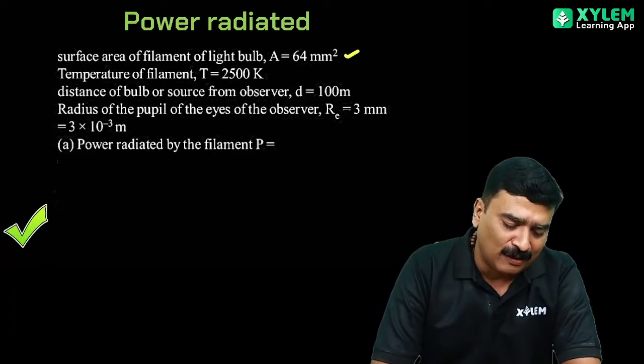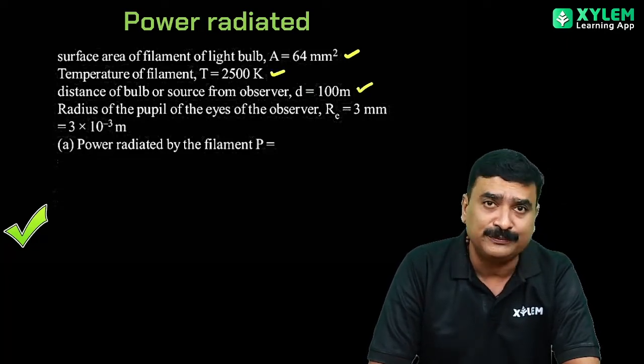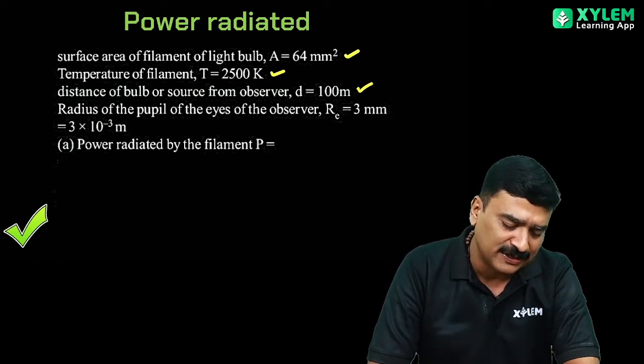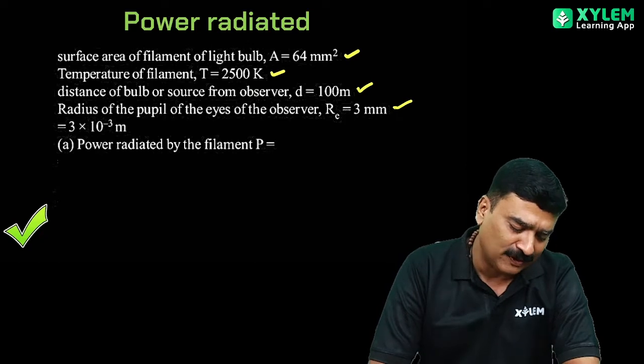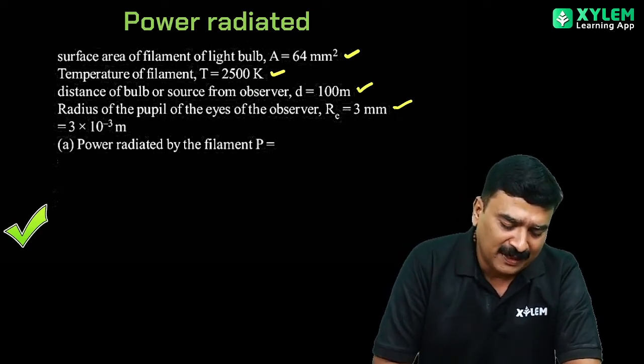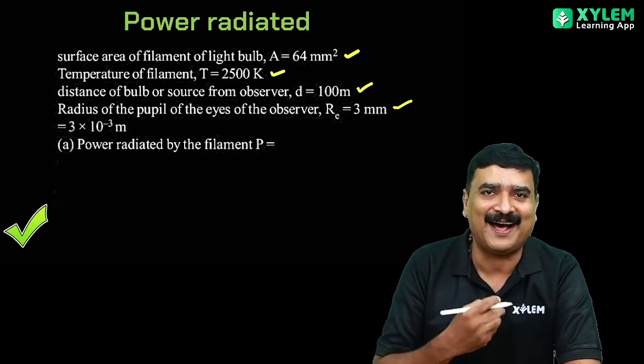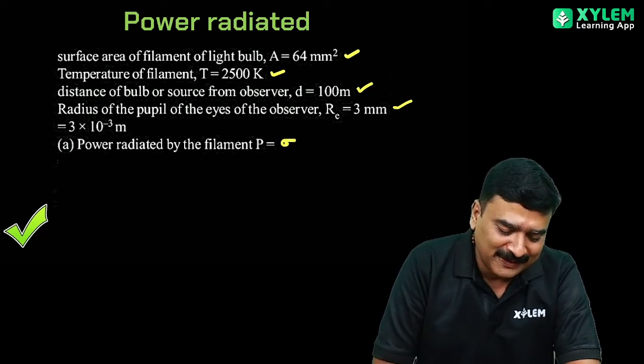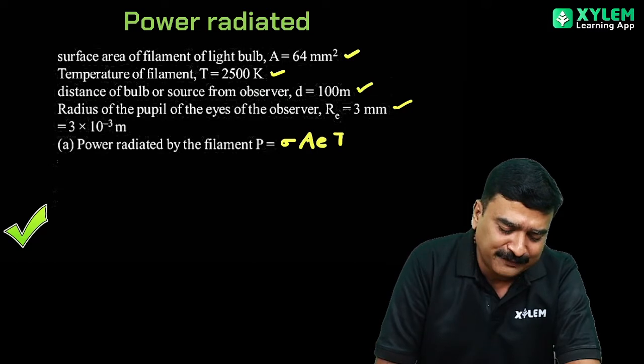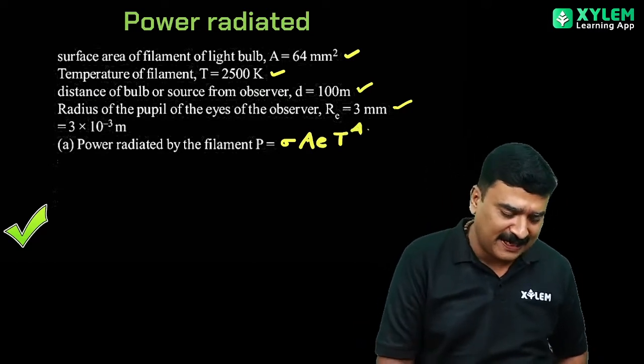Let's proceed step by step. The surface area is already given, temperature is also given, distance to observer is also given, and radius of the pupil of the eye is also given. For power radiated by the filament, P, we can calculate using the Stefan-Boltzmann equation. I know the equation - P equals sigma into area into emissivity into T raised to 4. This is our equation.